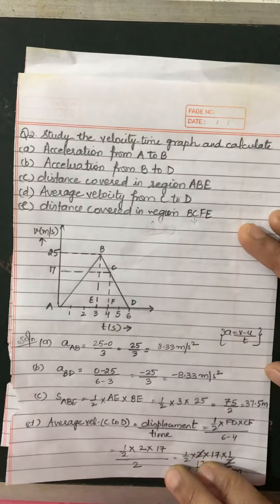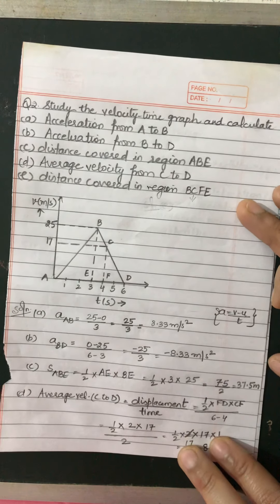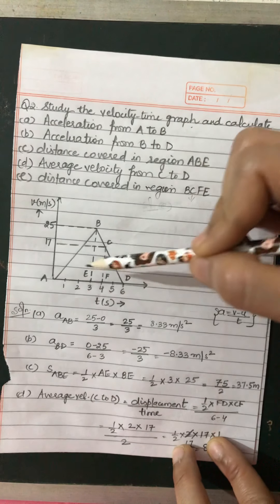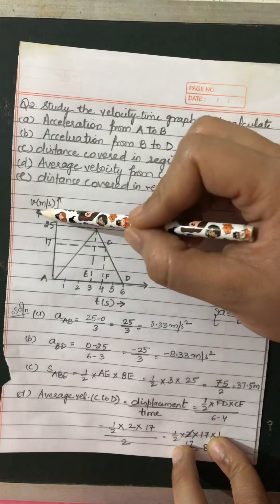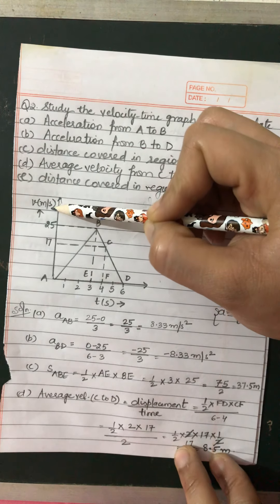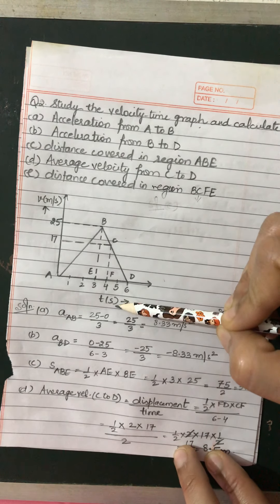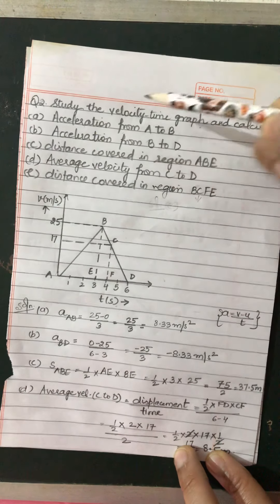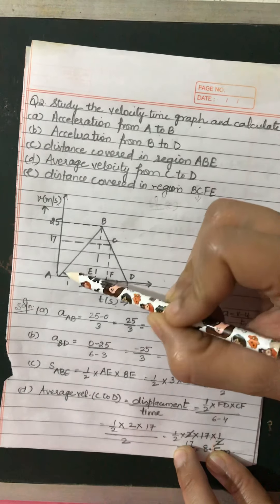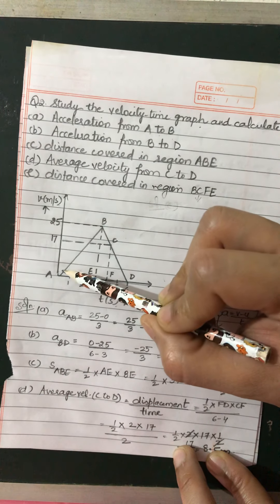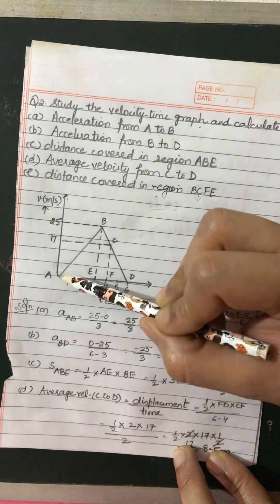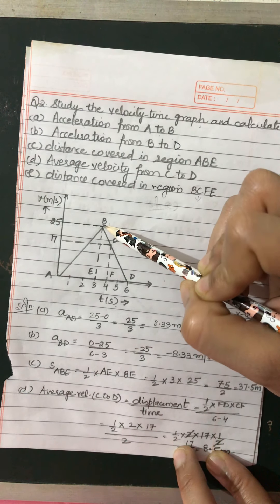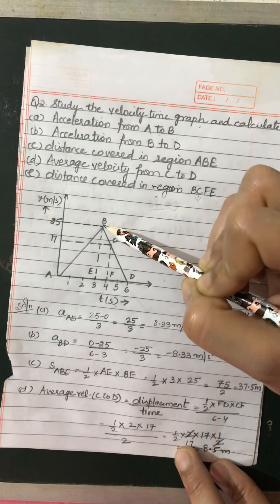Now see question number 2. Study the velocity-time graph. Again a velocity-time graph is given: velocity unit is meter per second and time unit is second. What you have to calculate is acceleration from A to B. The velocity-time graph is sloping upward, so velocity is increasing. This part is showing uniform acceleration.